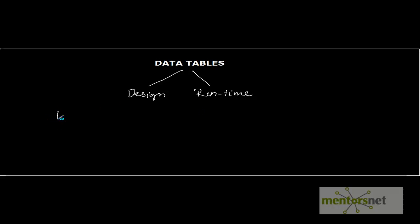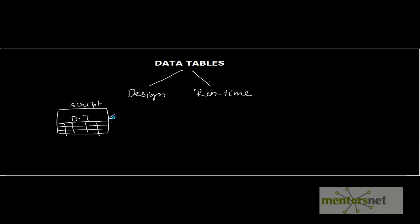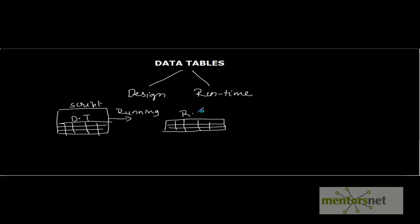Let me show you with a diagram. Let's say this is your script in editing mode with a data table having a number of rows and columns — this is your design time data table. When you execute this script, meaning when QTP is in running mode, QTP creates one data table which is a live version or replica of this data table, and it is referred to as the run time data table.